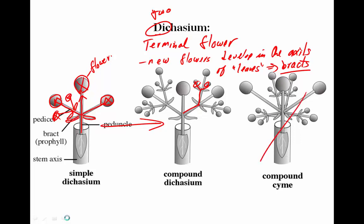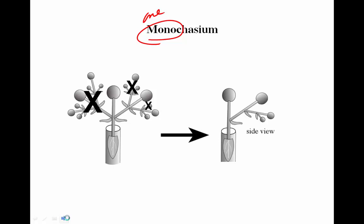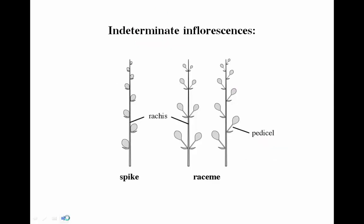A compound dichasium continues that pattern on and on. A monochasium — 'mono' meaning one — is a variation where some branches don't develop, so at each node there is only one leaf, one axis, one flower, and that continues on one side. That's the same basic branching pattern, just happening on one side only.